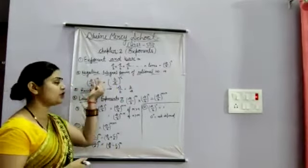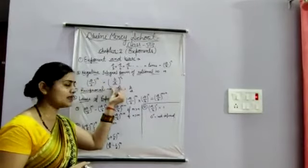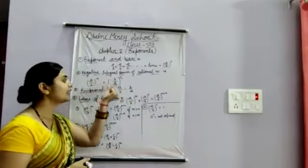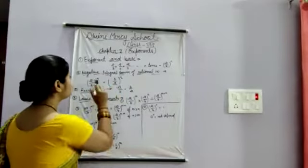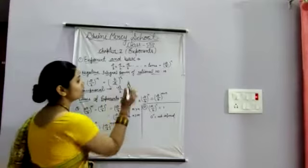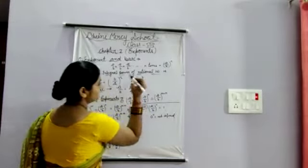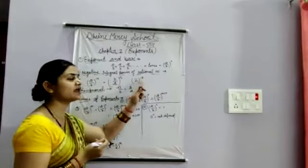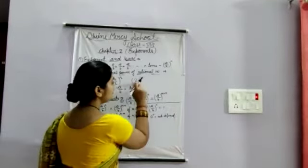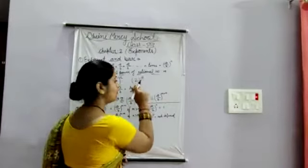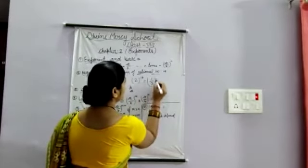To make the power positive, we write the reciprocal of the base. For example, if we have 2 to the power minus 3, we write the reciprocal of 2, which is 1 upon 2, to the power 3. This gives us a positive power.